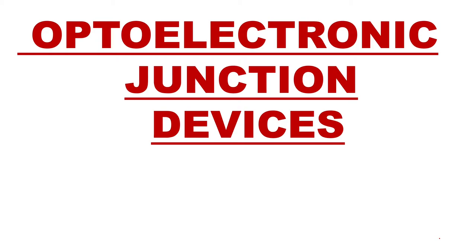These will be semiconductor junction devices. A junction means when you connect p-type and n-type material, you form a p-n junction — so it is a p-n junction device. But these devices are going to work under the influence of light. They will either convert light energy into electrical energy or convert electrical energy into light energy.